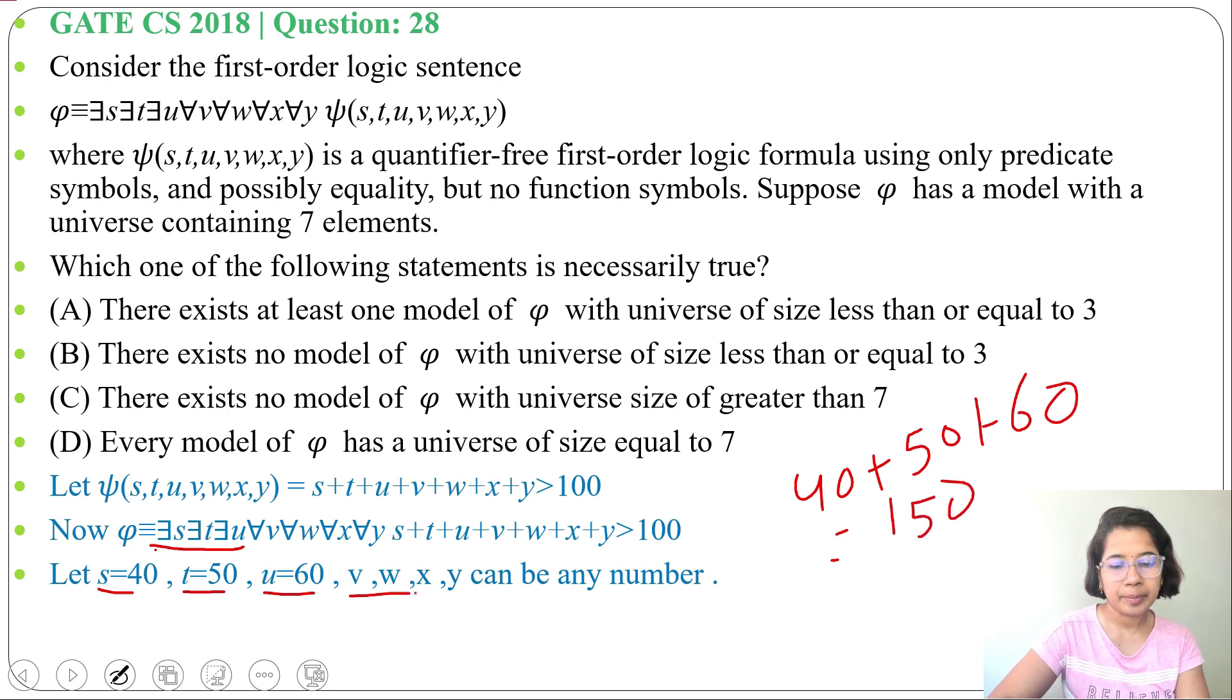After that v,w,x,y can be anything. Whatever value you are taking for v,w,x,y - 1, 2, 3, 4, anything - that summation will be greater than 100. These three are limited: s,t,u are limited, whereas v,w,x,y can be anything.